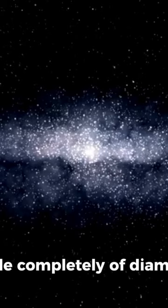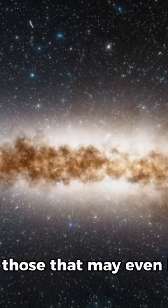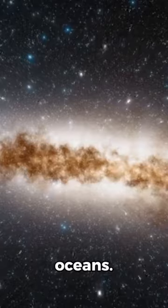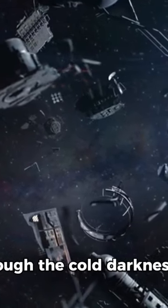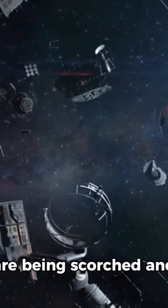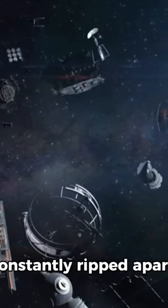From dead planets that are made completely of diamond to those that may even be comparable to Earth with thick atmospheres and vast oceans, some are rogue as they wander through the cold darkness of space, while others orbit their star so close that they are being scorched and constantly ripped apart.